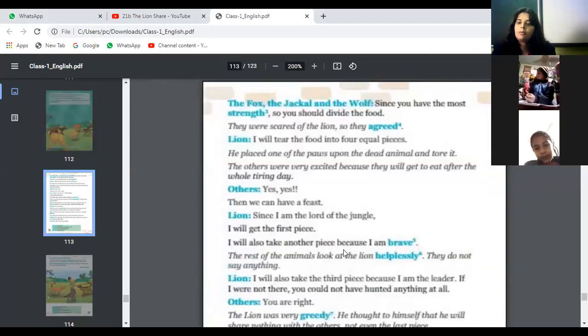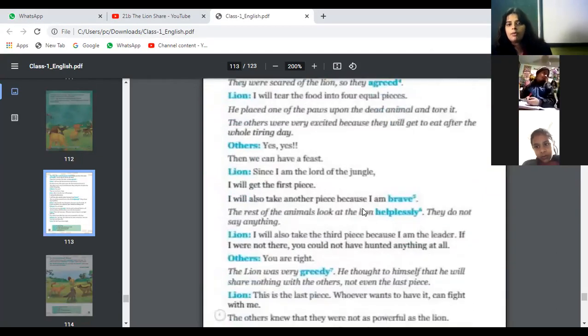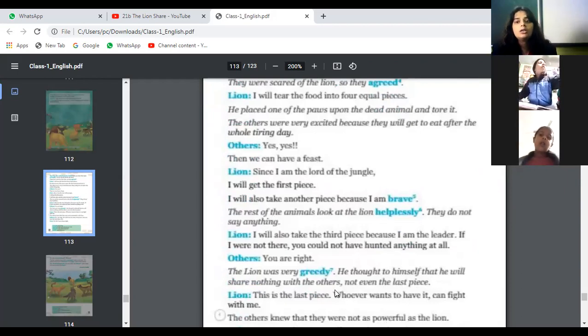When it was a deer hunt, the lion told me that I will divide the three pieces. But what did he do? When the first piece divided, he said that I will take the first piece because I am the king of the jungle. Then he said that I will take the second piece because I am a bearer. Then he said that I will take the third piece because I am a leader, so you cannot do anything.